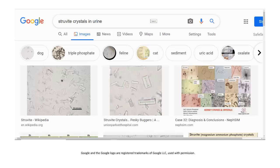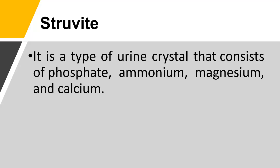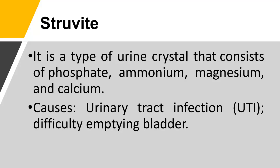Struvite crystals in urine consist of phosphate, ammonium, magnesium, and calcium. Causes include urinary tract infection (UTI) and difficulty emptying the bladder.